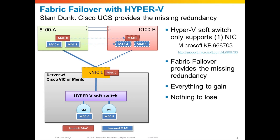So with Hyper-V, Fabric Failover really is a slam dunk. There's everything to gain and nothing to lose. You're bringing a lot of the high availability that Hyper-V has been missing up to this point. UCS comes to the rescue with Fabric Failover.